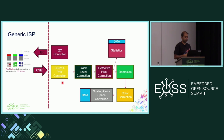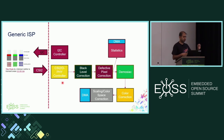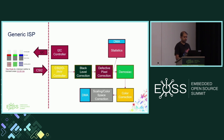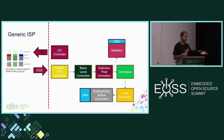The black-level correction is applied on a frame-by-frame basis and updated when gains change. Then there's defective pixel correction, which handles dead or defective pixels introduced during sensor manufacturing. The next block is a demosaic, which converts the Bayer pattern to RGB — or sometimes YUV. Following that is color space correction to make images look more appealing to humans, then scaling or further color space conversion blocks, and finally a DMA block at the end to write frames out to DDR memory.